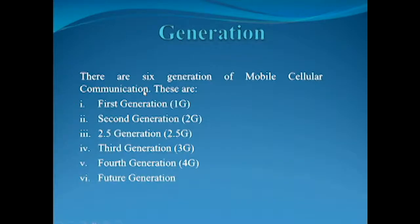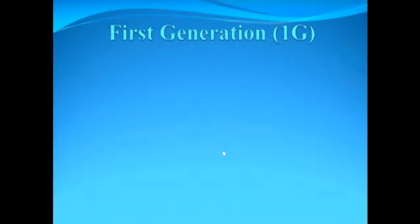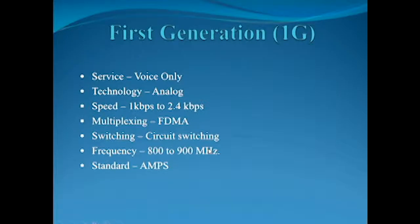Now we discuss the generations. There are six generations of mobile cellular communication: first generation, second generation, 2.5 generation, third generation, fourth generation, and future generation. Now we discuss the first generation. The features of first generation are: